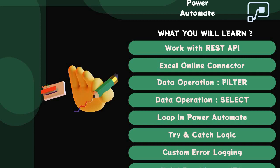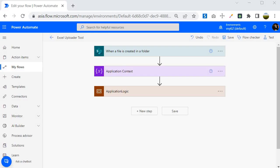Welcome back. In this session we are going to learn about try and catch logic in Power Automate. This session is also a continuation from the earlier session where we were creating the Excel uploader tool. Let's jump into the Power Automate portal where we will implement the try and catch logic.